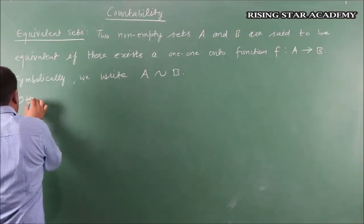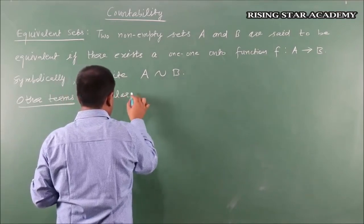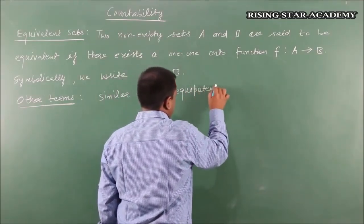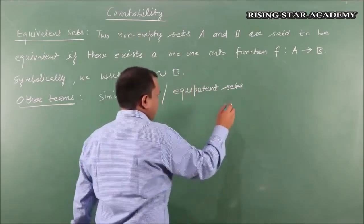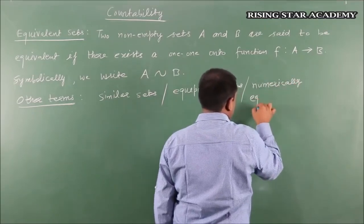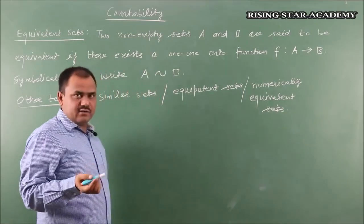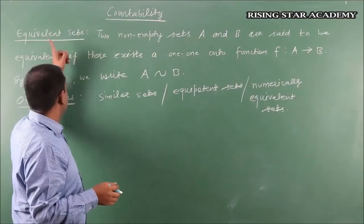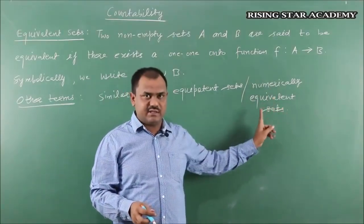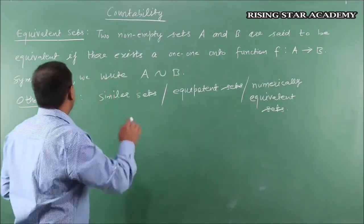Some other terms are also used in place of equivalent sets. One of them is similar sets. Second, equipotent sets. Another term is numerically equivalent sets. These are the different conventions used for equivalent sets.